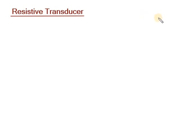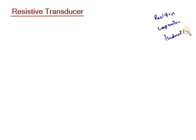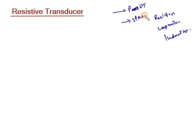In the last lecture we have seen that on the basis of principle used, transducers can be classified into resistive, capacitive, inductive and so on. So here we are going to discuss resistive transducers, and we will be discussing the different resistive transducers like potentiometer and resistive strain gauge.